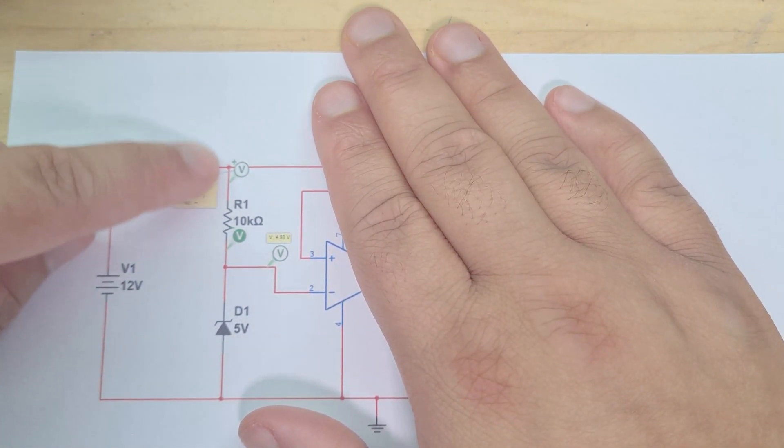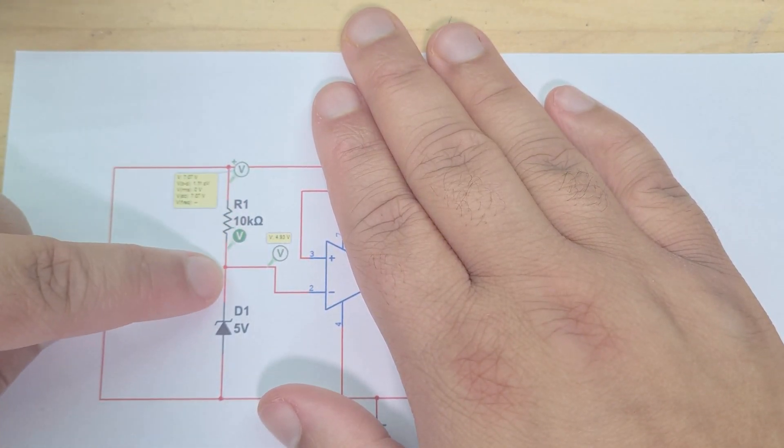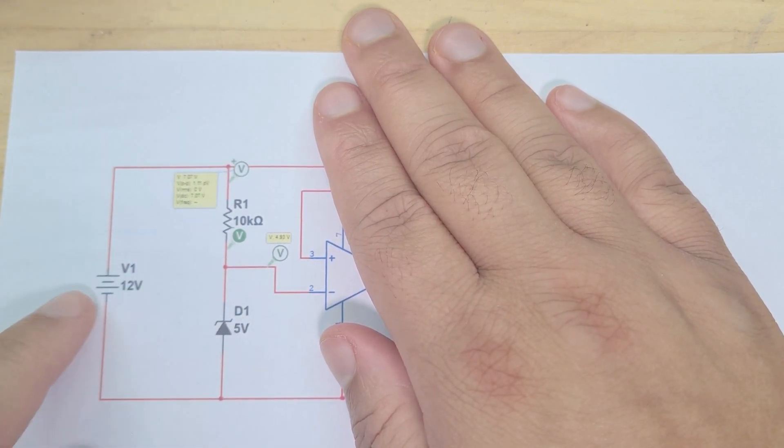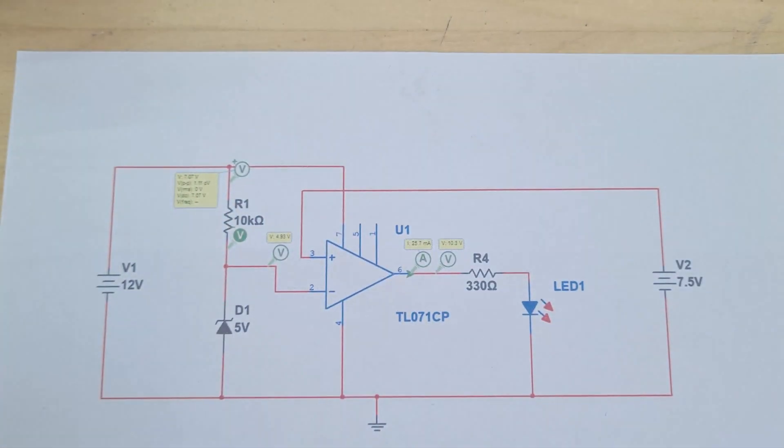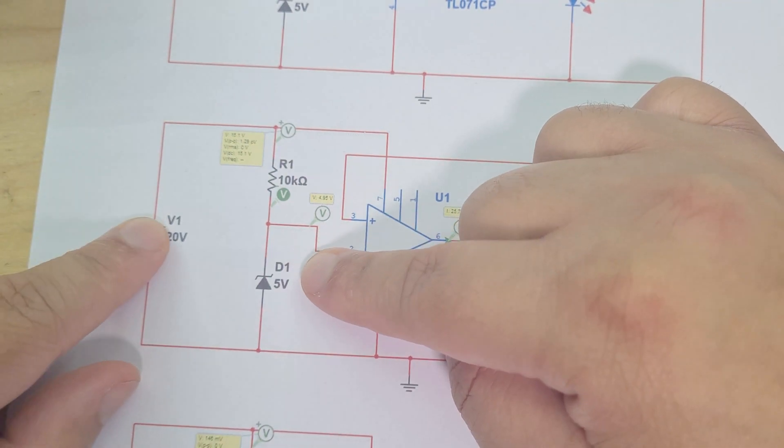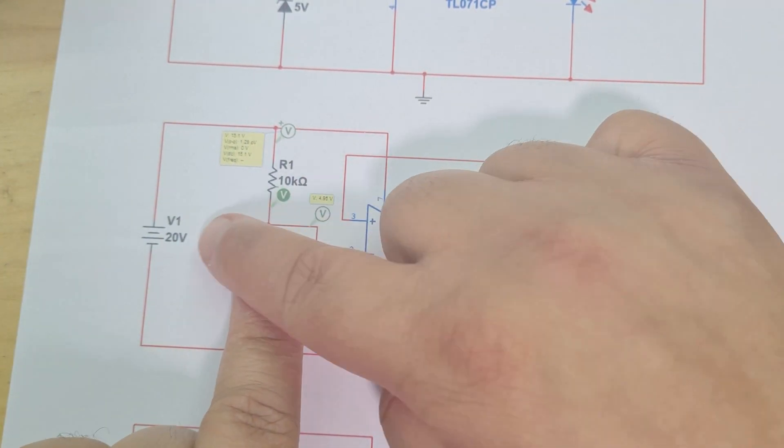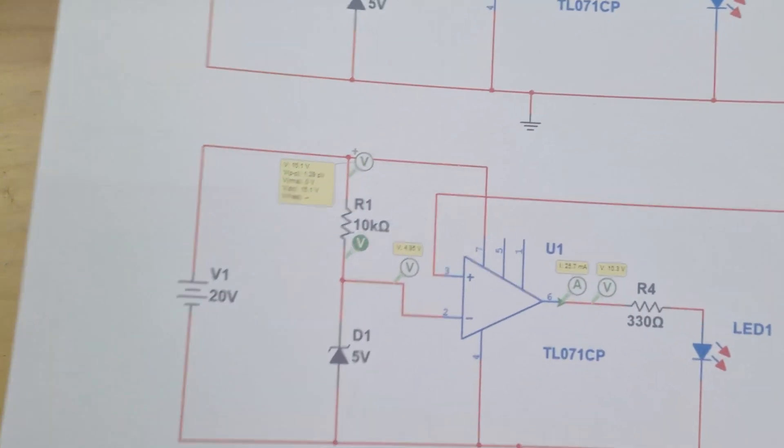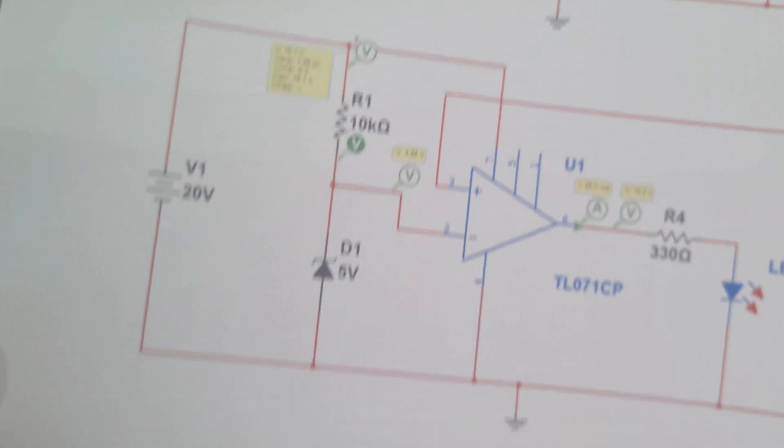If I just take 12 take away 5, that means it's gonna be 7 volt drop there. If I do the same up here, you can see again 20 volt supply, 5 volts minus 5 volts is 15. So you're gonna have 15 volt drop there and you can see the 15 volt drop.